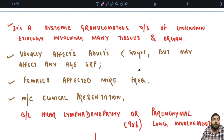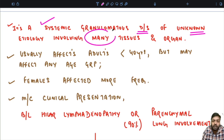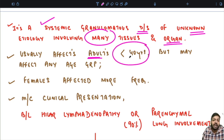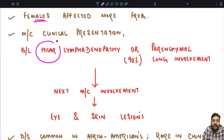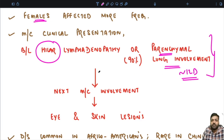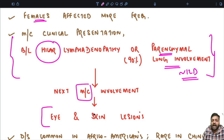Sarcoidosis is a systemic granulomatous disease of unknown etiology, involving many tissues and organs. It usually affects young adults in the age range of 20 to 40 years — individuals less than 40 years — though it may affect any age group. There is a predilection to involve females more than males. The most common clinical presentation is bilateral hilar lymphadenopathy or parenchymal lung involvement in the form of ILD. In 90 percent of cases, the most common presentation is bilateral hilar lymphadenopathy or parenchymal lung involvement.